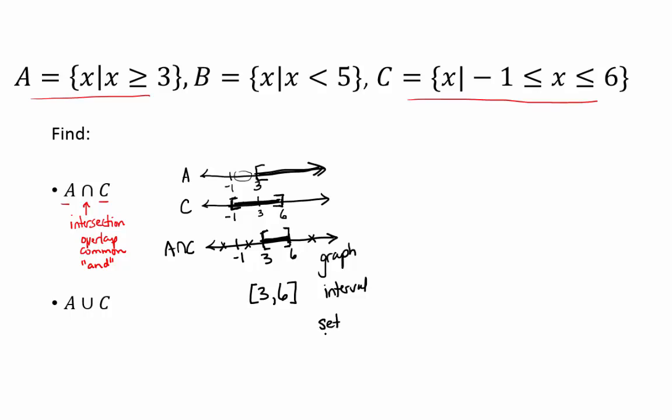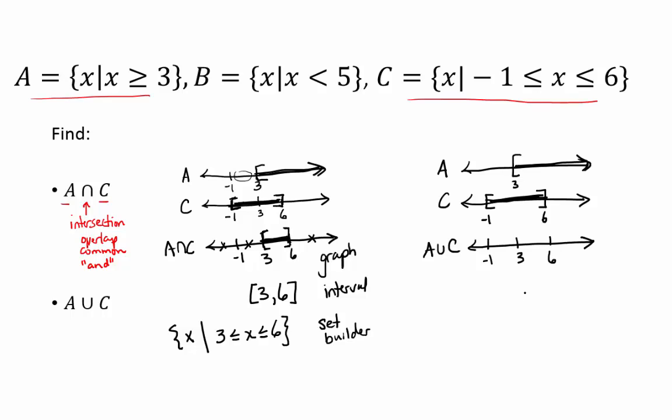How about set builder notation like we had at the top there? We'd have the set of all numbers X such that 3 is less than or equal to X, which is less than or equal to 6. So that's A intersect C. Let's do A union C. It's easier to look at it when they're lined up very nicely together, and when your new graph, A union C, is right underneath as well. So I'm going to line up my boundary values: negative 1, 3, and 6. What's the rule for union? What does union mean? Together. All together. That's right. All together. We're uniting them into one big set. Anything that's in set A or set C has to be included in the union.